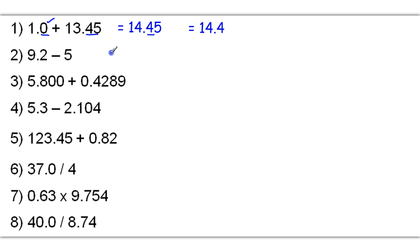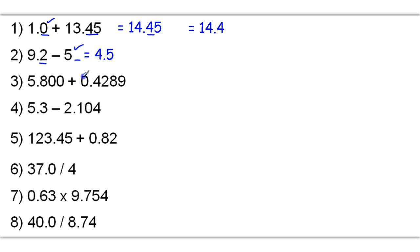9.5 — 9.2 minus 5 is going to give me a raw answer of 4.5. Because this number has one decimal place and this number has no decimal places, we're going to go with no decimal places. So I want to round off here at the 4, and because we are followed by a dead even 5 one more time, it's going to remain just 4.